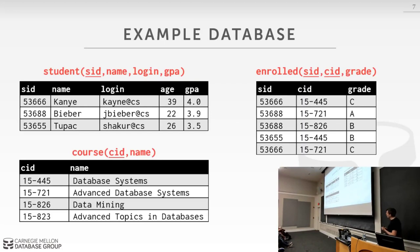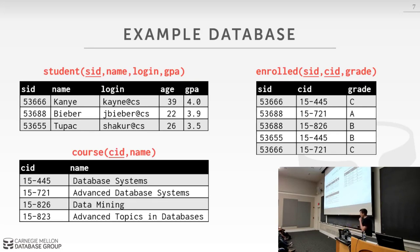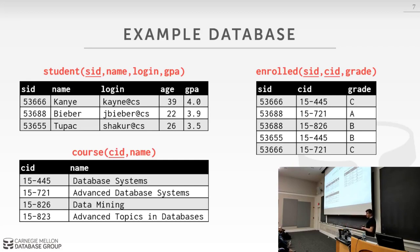For examples, we'll use a sample mock university database with three tables: a Student table with student IDs, names, logins, and GPAs; a Course table with course IDs and names; and an Enrolled table with foreign key references to Student and Course along with the grade the student got in the class.